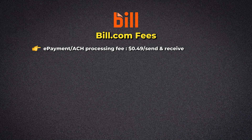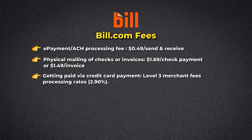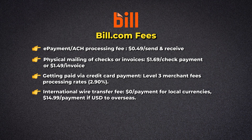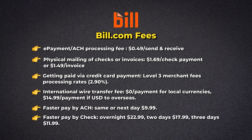Bill.com has an ACH processing fee of $0.49 to send and receive. For physical mailing of checks or invoices, you're looking at $1.69 per check payment or $1.49 per invoice. To get paid via credit card, you're looking at level three merchant fees processing rates at 2.9%. International wire transfers cost $0 for payment in local currencies or $14.99 if the payment is from USD to overseas. A same-day or next-day ACH transfer runs $9.99. Fast pay by check is $22.99 to overnight, $17.99 for two-day delivery, and $11.99 for three-day delivery.